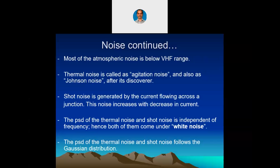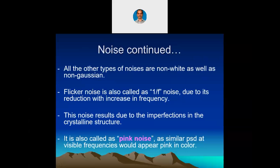In addition, the power spectral density of thermal noise and shot noise follows the Gaussian distribution, where from the standard deviation sigma you can go plus and minus in both directions. The curve peaks and gradually rolls down on both sides approaching the x-axis. Both noises follow this Gaussian distribution. All other types of noises are non-white and non-Gaussian — they do not follow Gaussian distribution and do not affect all frequency ranges.